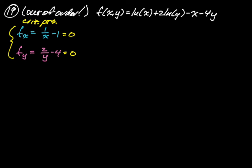For critical points we set partial x = 0 and partial y = 0. Where these partials are undefined (at x = 0 or y = 0), the original function is also undefined, so we don't worry about those. Solving algebraically, x = 1 and y = 1/2. So our critical point is (1, 1/2).